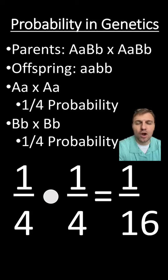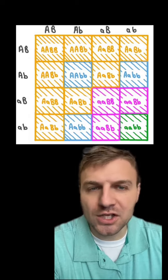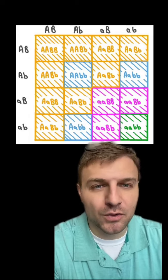So without drawing out the whole Punnett square, we can use math to figure out the probability of having certain offspring in a dihybrid Punnett square. And if you do want to check your work, here is a dihybrid Punnett square.